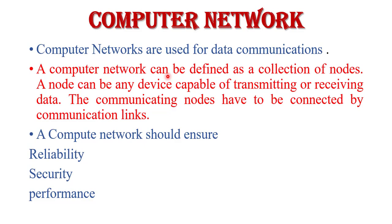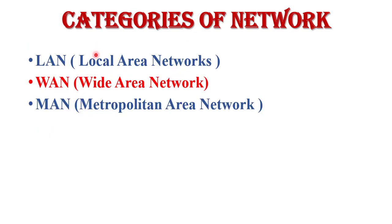Now, computer networks. Computer networks are used in data communication for transmitting information between devices. A computer network can be defined as a collection of nodes — a node is any device capable of transmitting or receiving data. The communicating nodes have to be connected by a communication link or transmission media. The computer network should ensure reliability, security of data, and performance by achieving higher throughput and smaller delay time. Based on their size, there are three types of networks: LAN (Local Area Network), WAN (Wide Area Network), and MAN (Metropolitan Area Network).